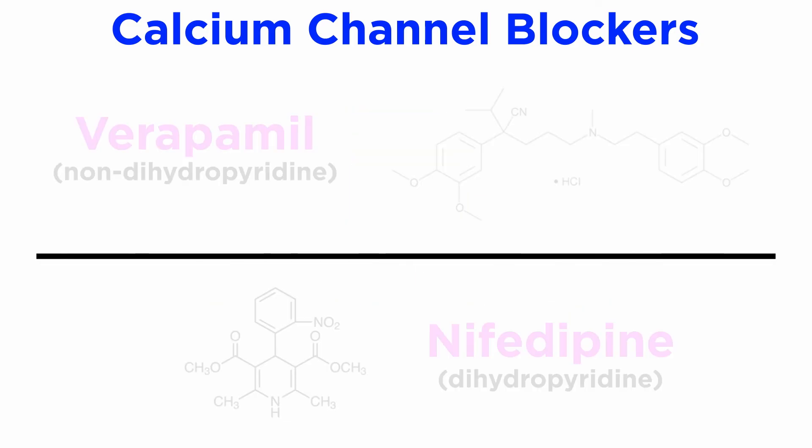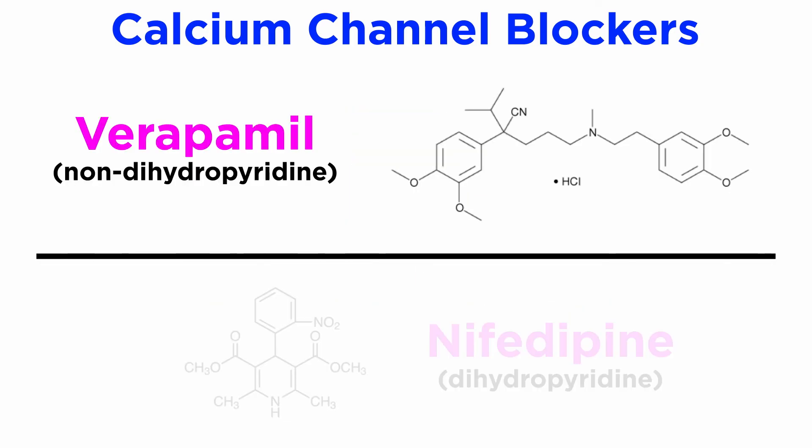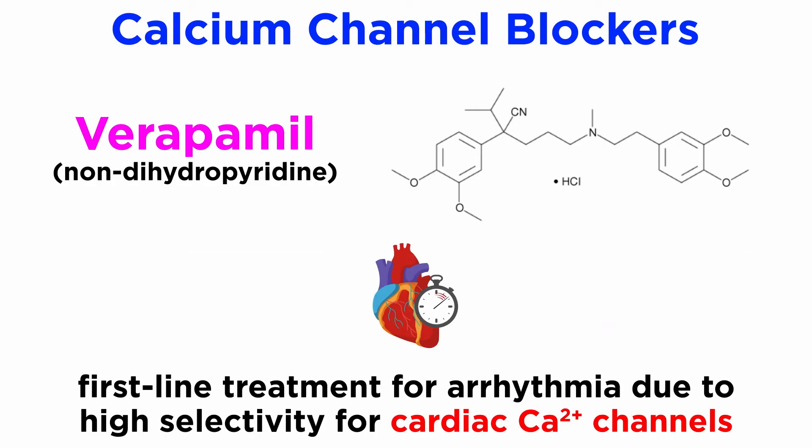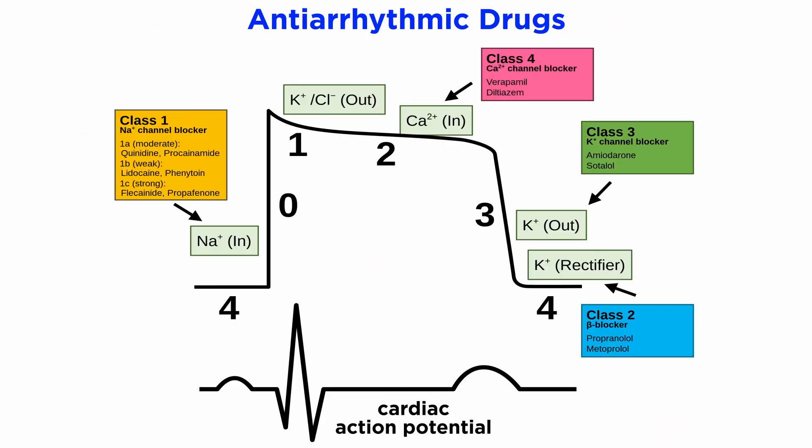Some examples of class 4 antiarrhythmic drugs are verapamil, a non-dihydropyridine, and nifedipine in the dihydropyridine class. Generally, drugs like verapamil are first-line treatment for arrhythmia due to their relative selectivity on cardiac calcium channels, rather than drugs in the dihydropyridine class due to their effect on smooth muscle cells lining blood vessels. In conclusion, antiarrhythmic drugs act to delay the cardiac action potential and contractility of the heart in the hope that normal rhythm can be reestablished in a state of cardiac arrhythmia.